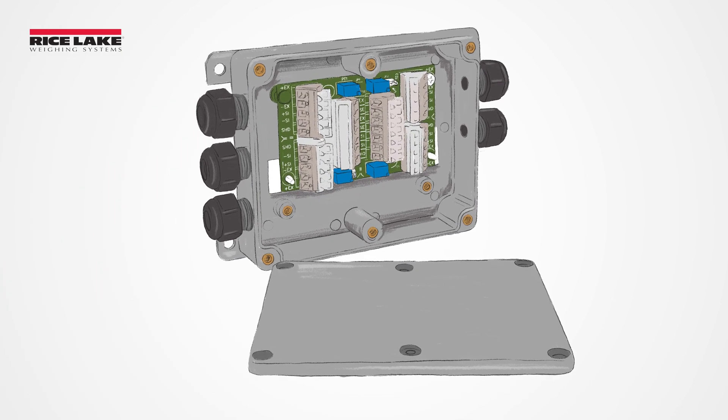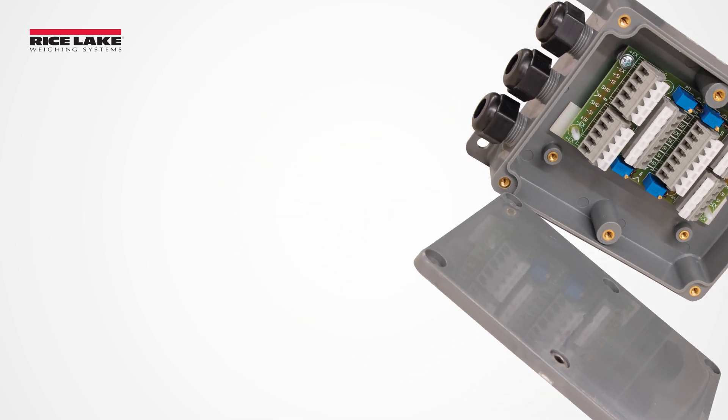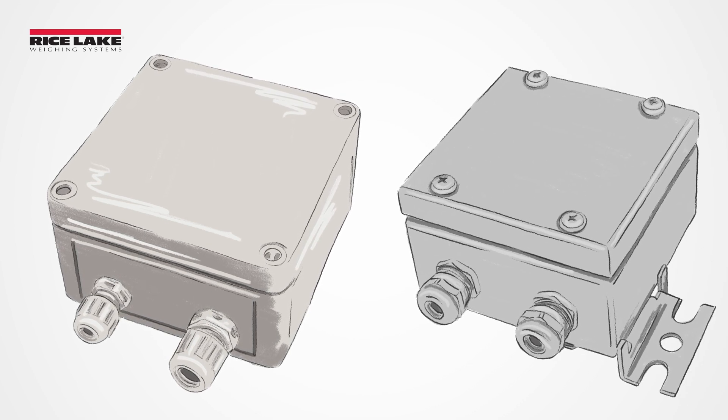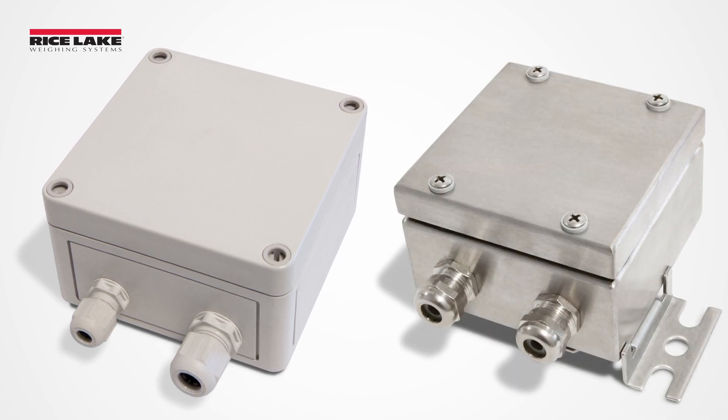The way the junction box is constructed plays a role in how durable and reliable it is. Most junction boxes are either made of plastic or metals. Plastic is lighter and less expensive, but stainless steel is ideal for harsh and washed down environments.